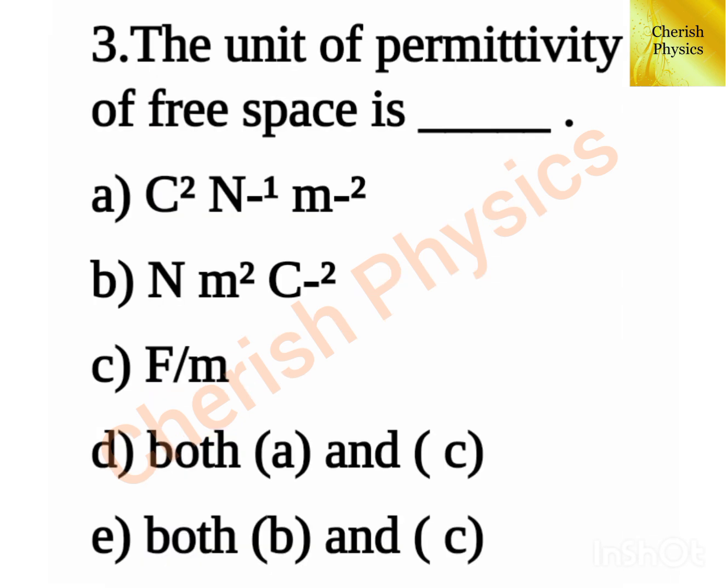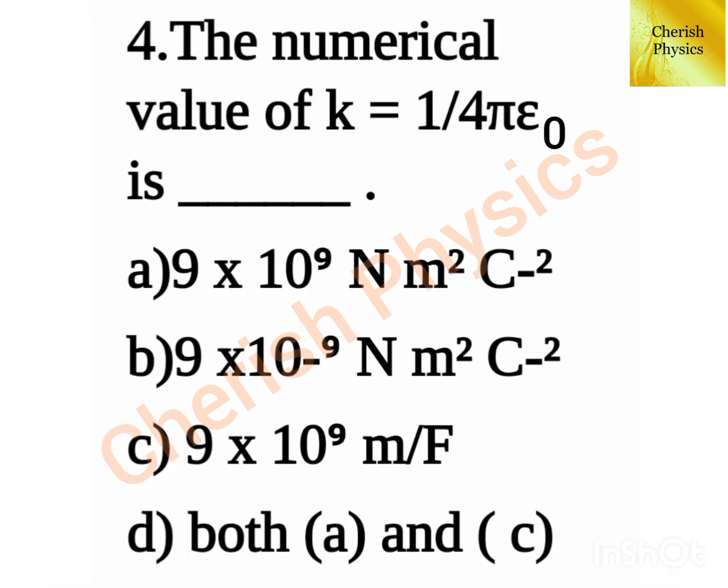The unit of permittivity of free space is dash. The numerical value of the proportionality constant k, equal to 1 by 4 pi epsilon naught, is dash.